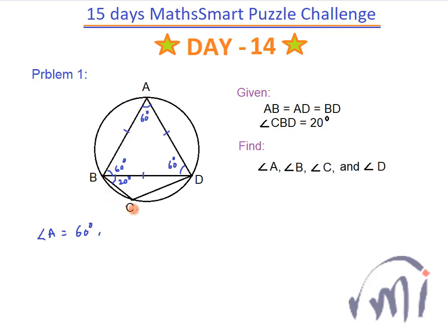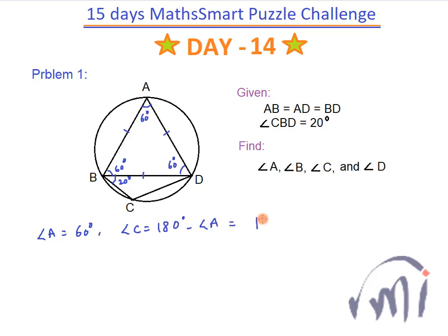We can see that ABCD is a cyclic quadrilateral — all four points of the quadrilateral lie on the circumference of a circle. In any cyclic quadrilateral, the sum of two opposite angles is equal to 180 degrees. So angle C will be equal to 180 minus angle A, that is 180 minus 60, which is 120 degrees.